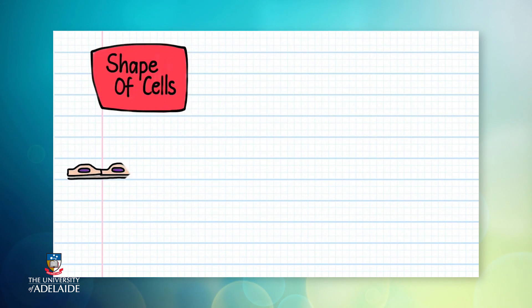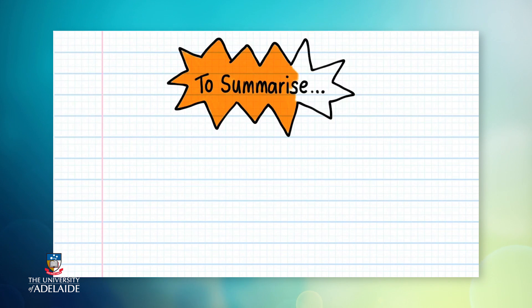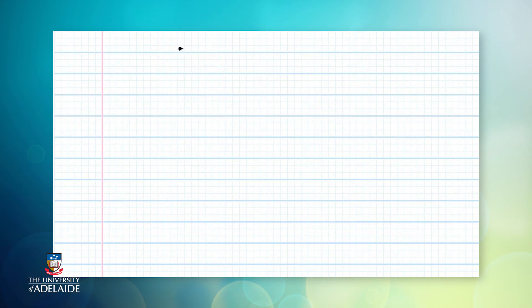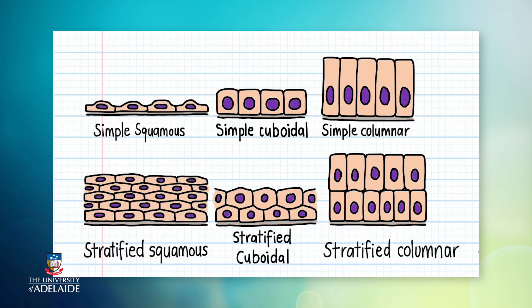So to summarize, if you're asked to name epithelium, first state the number of cell layers present, and then the shape of the cells. Here are some common examples of epithelium: simple squamous, simple cuboidal and simple columnar, and then stratified squamous, stratified cuboidal and stratified columnar.